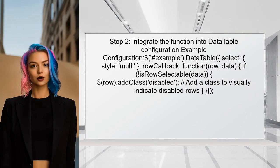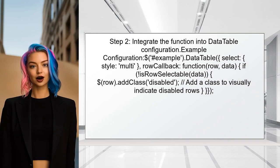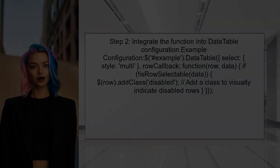Next, integrate this function into the data table's configuration. This can be done by using the row callback option to apply the selection logic.